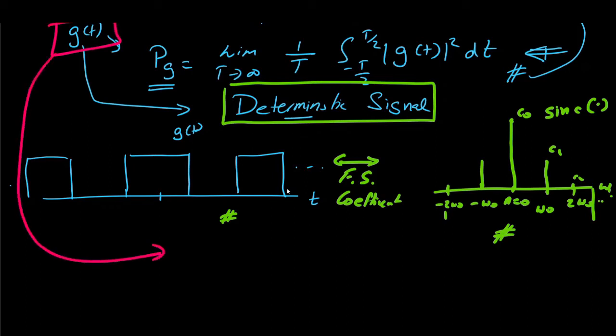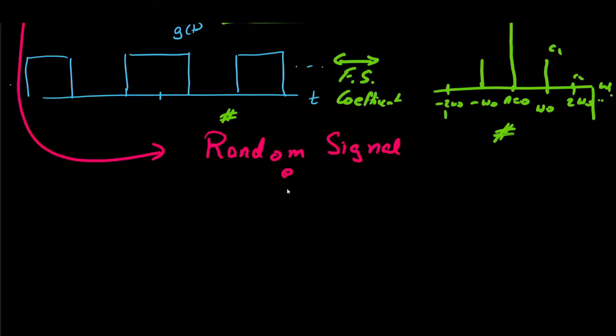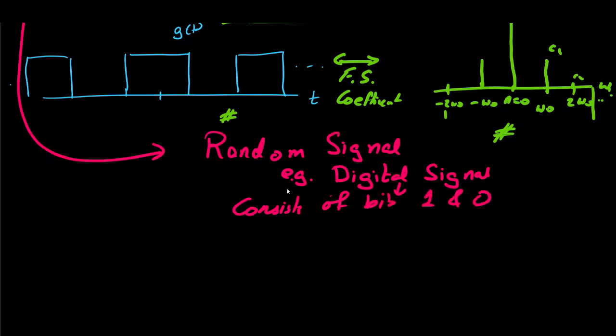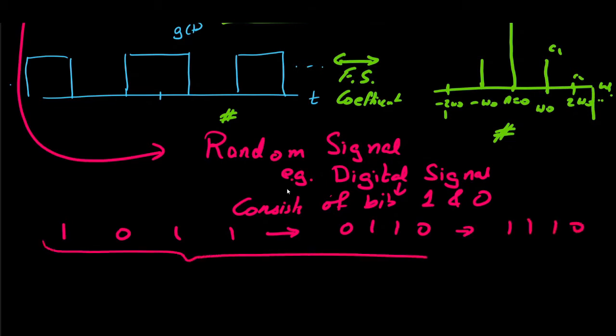For example, a digital signal. This consists of bits which are having value 1 and 0. At one instant, we may have a frame which is 1011. But at the second instant, we have another frame which is say 0110. And it keeps on changing. Since this is now a random signal,